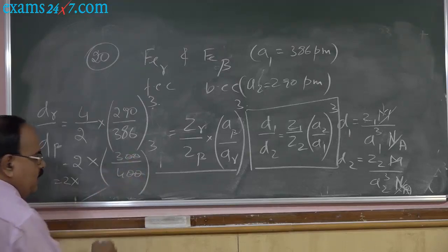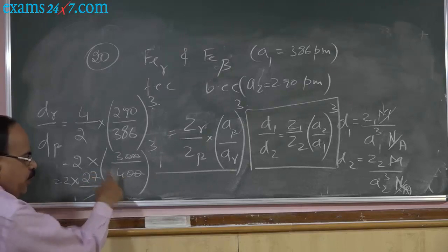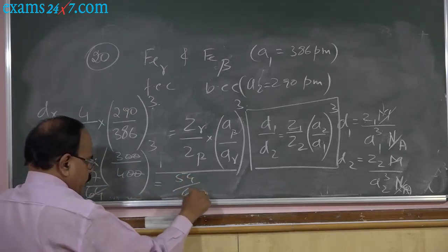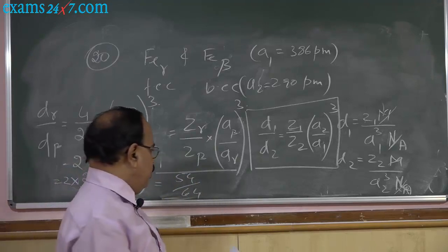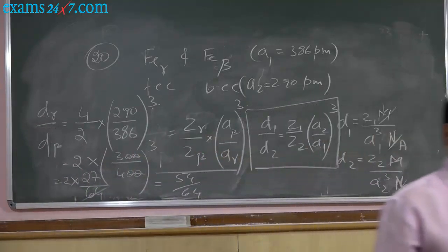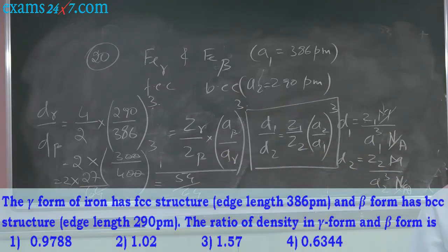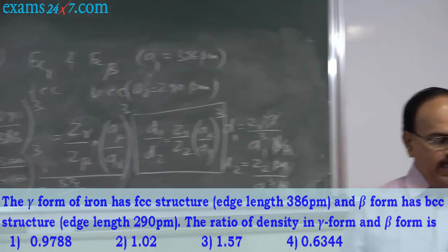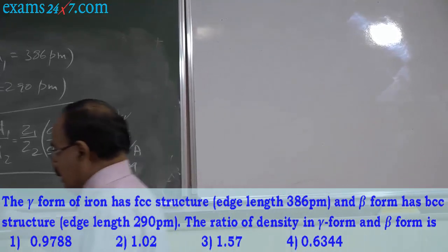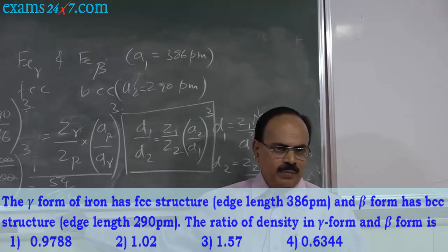Now (3/4)³ = 27/64. So it is 2 × 27/64 = 54/64. What can be the answer? 54/64 is less than 1, and it is closer to 1 — somewhere around 0.9. The first option given is 0.9788. Is it not less than 1 and closer to 1 also? The answer should be around 0.9.